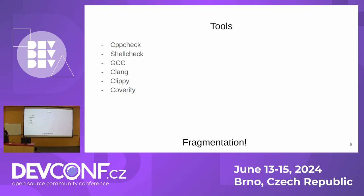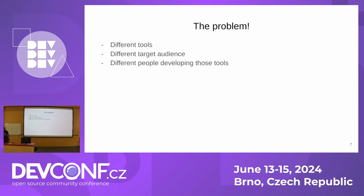What is the problem we're trying to solve? The problem is fragmentation. Each of these tools are different, developed independently of each other, with different target audiences. For example, ShellCheck is for shell, CppCheck is for C++, Coverity is more general. And either different communities or companies are behind some of these tools.